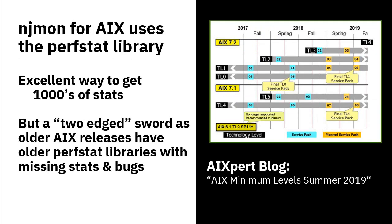When running NJMon on AIX, it uses the perfstat library — an excellent piece of technology that gives a C program very simple access to thousands of stats from the kernel. But it is a two-edged sword, as older AIX releases have older perfstat libraries — sometimes stats are missing because they were only added recently, and sometimes there are genuine bugs in the library. To ease problems around that, I've documented in my AIXpert blog that I'm only really going to support AIX levels that came out since 2017. If your AIX is before that, you may just have to upgrade to a currently supported release to remove those bugs.